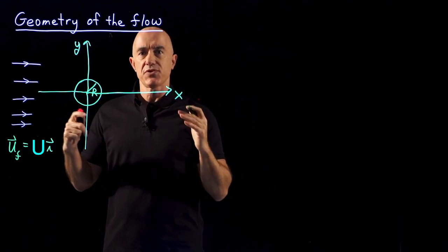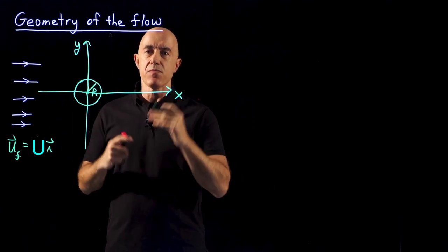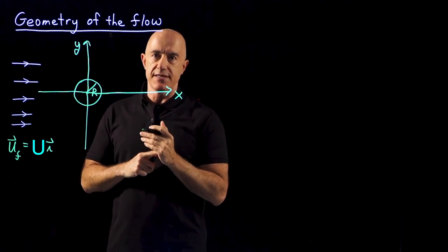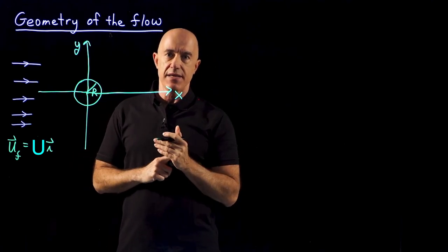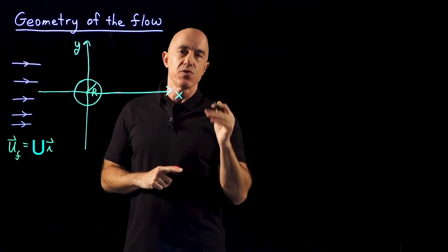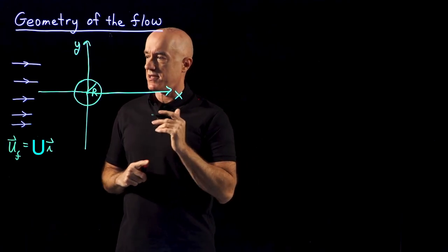If the fluid becomes turbulent, then you get random motion and you can have motion in z, and the flow field itself can depend on z. But we're going to be doing non-turbulent flows in this class.